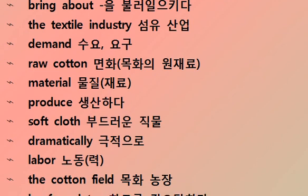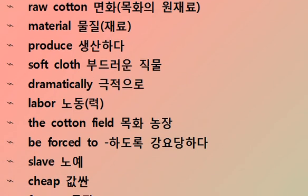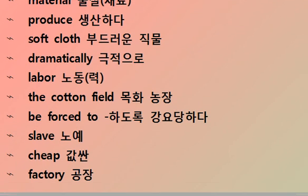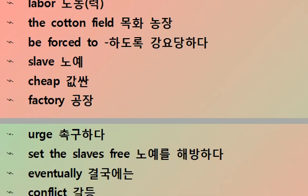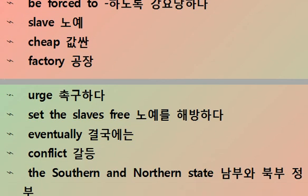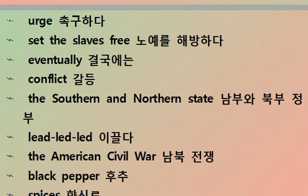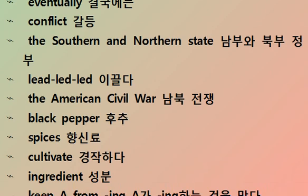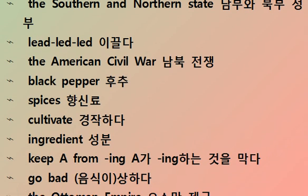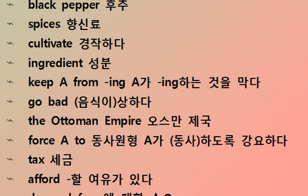Cotton — the industrial revolution brought about the textile industry. Demand for raw cotton to produce soft cloth grew dramatically. Labor in the cotton fields was forced — enslaved people worked cheaply. Urging to set the slaves free eventually led to conflict between the southern and northern states, leading to the American Civil War. Black pepper — cultivated as an ingredient to keep food from going bad.